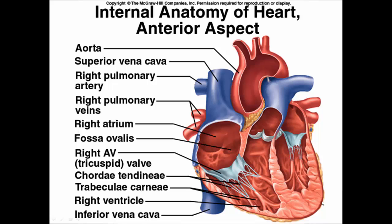Looking at the right side of the internal anatomy, we have the right atrium, the right ventricle, and the right atrial ventricular valve between them. Blood comes back to the heart either through the superior vena cava from the head and arms, or the inferior vena cava from the trunk and legs, back into the right atrium. The valves are present but not labeled in this diagram.